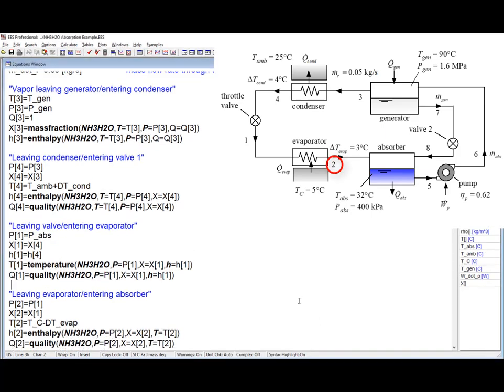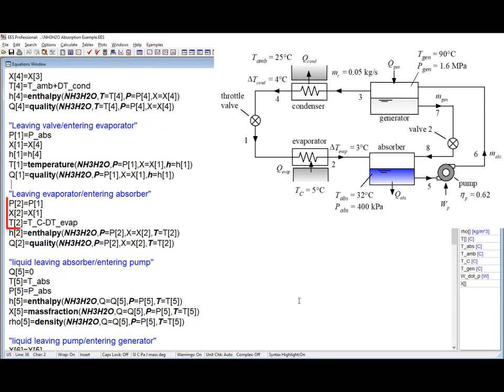The flow through the evaporator does not change pressure or mass fraction and the temperature is fixed by the evaporator approach temperature difference. So state 2 is going to be fixed by P, X, and T.